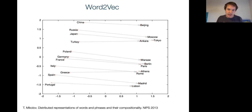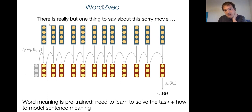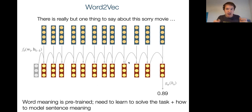Word vectors changed how we train NLP models: the input sentence becomes a sequence of word vectors, and a neural network — typically an LSTM — manipulates that sequence into a final prediction. Word meaning is pre-trained, so the model only needs to learn how to compose word meanings at the sentence level. This meant less training data was needed compared to the previous approach.